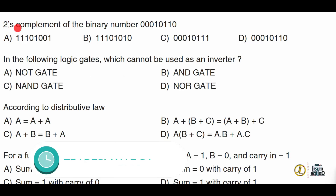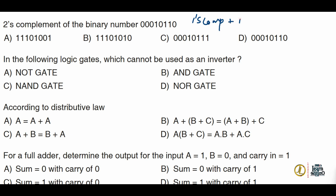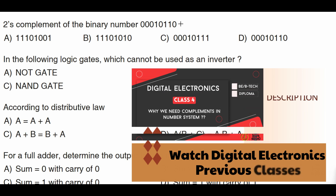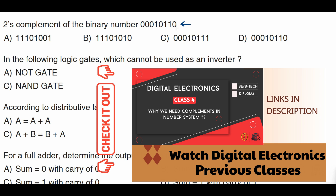The first question is: find the two's complement of the binary number 00010110. For finding two's complement, we find the one's complement and then add one. There is a shortcut: write the number from the right side until the first one comes.